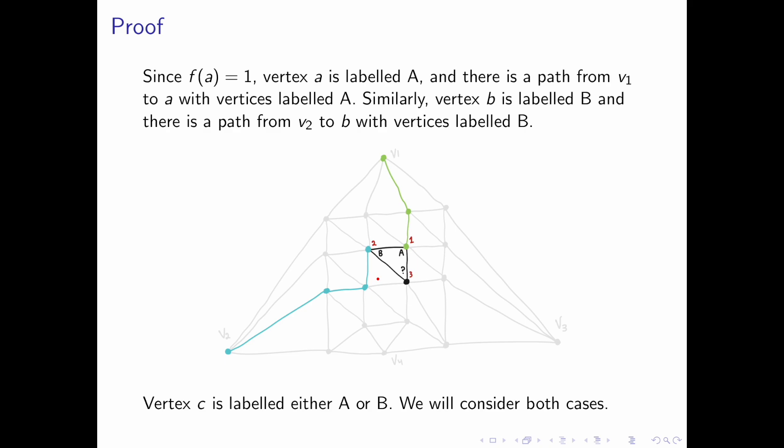Since f of A equals 1, vertex A is labeled with capital A, Alice's label, and there's a path from v1 to A with vertices labeled A. This is by the fact that f of A equals 1.